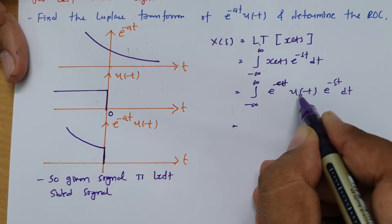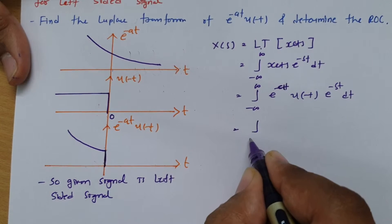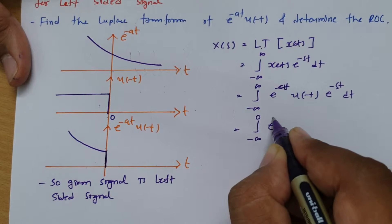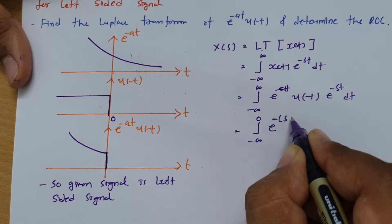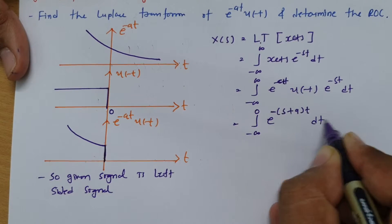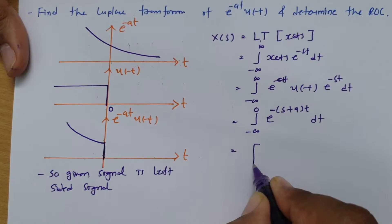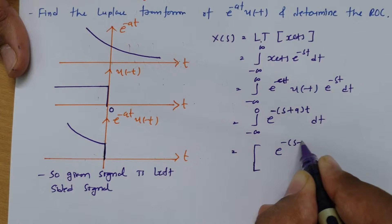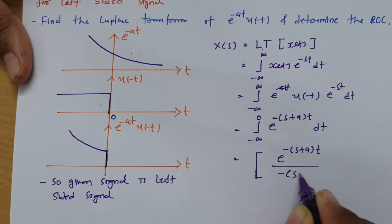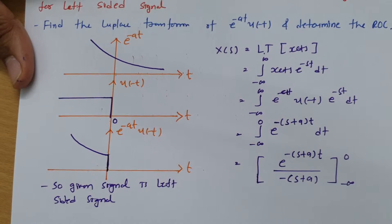Here u of minus t is varying from minus infinite to 0, so my limit will change to minus infinite to 0, e to the power minus s plus a t dt. The integration of this is e to the power minus s plus a t divided by minus s plus a, limit from minus infinite to 0.